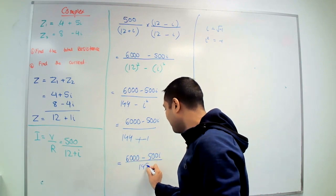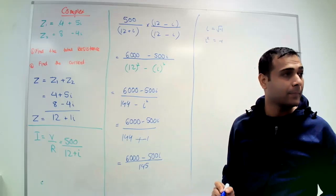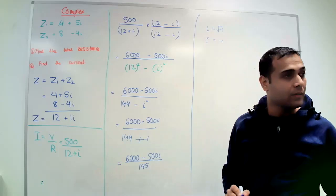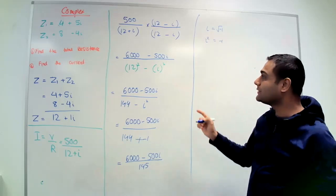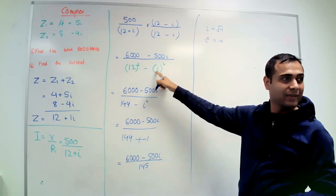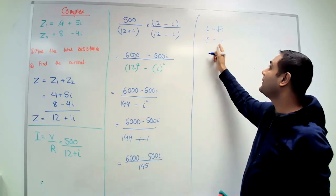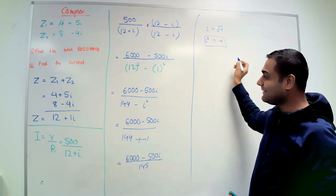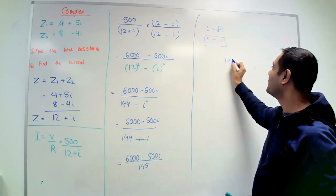So at the bottom I got 145. If that was an i, for example, if there was an i, i squared becomes minus one.